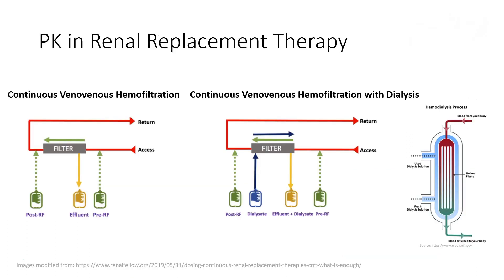The first we will look at is renal replacement therapy. There are various types of renal replacement therapy, two of which are shown here. The main function of renal replacement therapy is to replace the non-endocrine functions of the kidney — basically to serve as a filter to remove waste products, solutes, and sometimes drug. On the left, we have continuous venous hemofiltration. In this process, we take the patient's blood, pass it through a filter using pressure, and by convective flow, solute is removed and then the blood is returned to the patient.